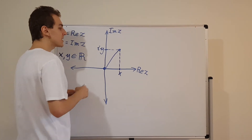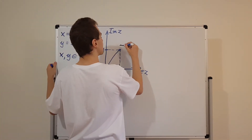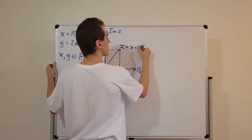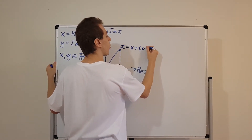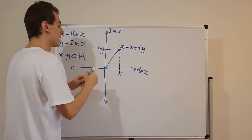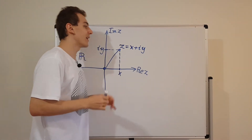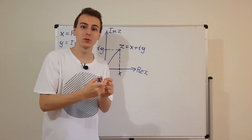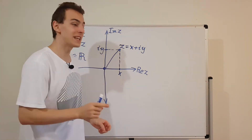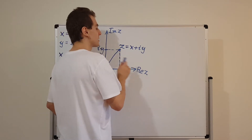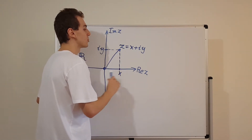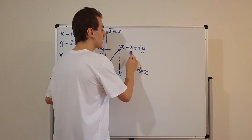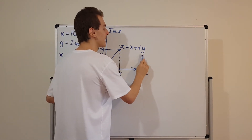So this complex number z is going to be equal to x plus i y. This is a lot like vectors in two dimensions where you split up the vector into its horizontal and vertical component, but as we said it's not exactly the same — there are some very important differences between vector spaces and complex numbers. So x is the real component, and y is the imaginary component.